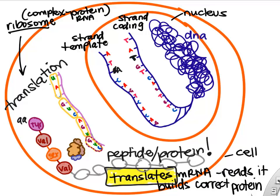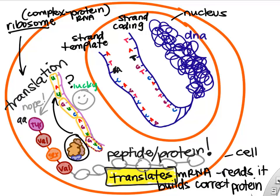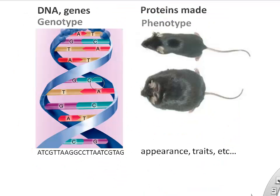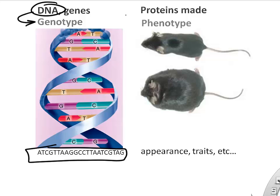Think about what happens when your DNA might change — have a mutation, a slight change in the sequence. Will that change what you actually build in terms of protein? If the ribosome reads it and it's different, it might. But in this case, when it reads it, it actually still uses a tyrosine, so it actually didn't cause a difference. We'll talk about that more in class.